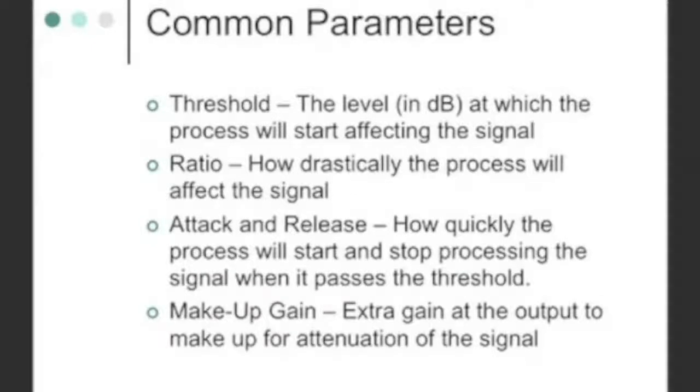The common parameters: Threshold is the level at which the signal, when it passes above, the processor starts processing. Ratio is how drastically the process will occur on the signal, how drastic the compression is.